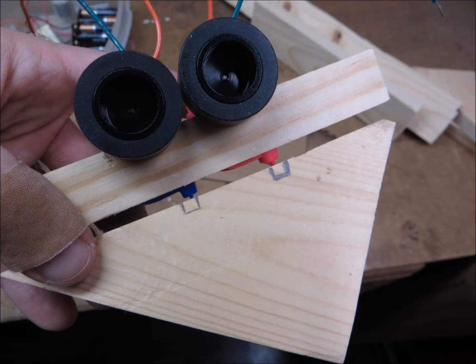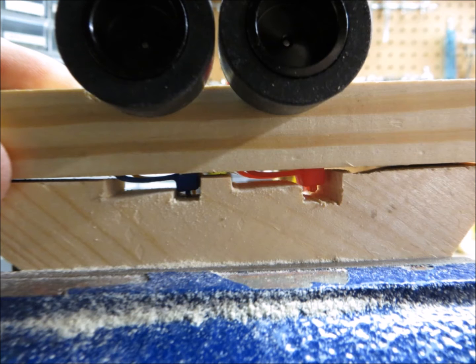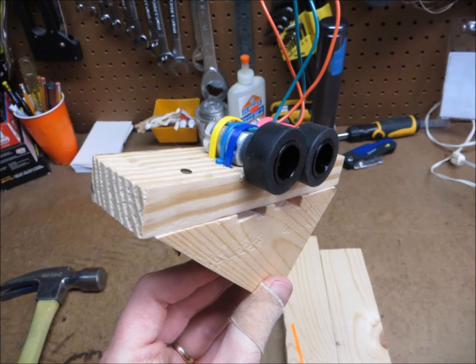Now that we had the motors mounted to the first piece of wood, we needed to mount that piece to the angled one. That meant carving out more space for the zip-ties to fit down in, so that the two pieces of wood could sit flush. Then, Dad nailed the two pieces together.